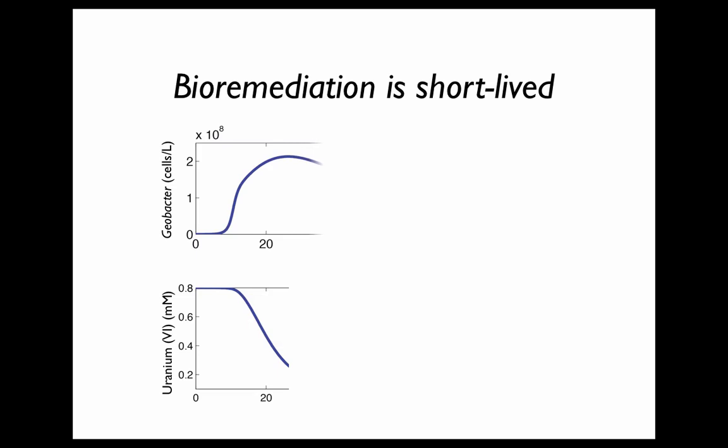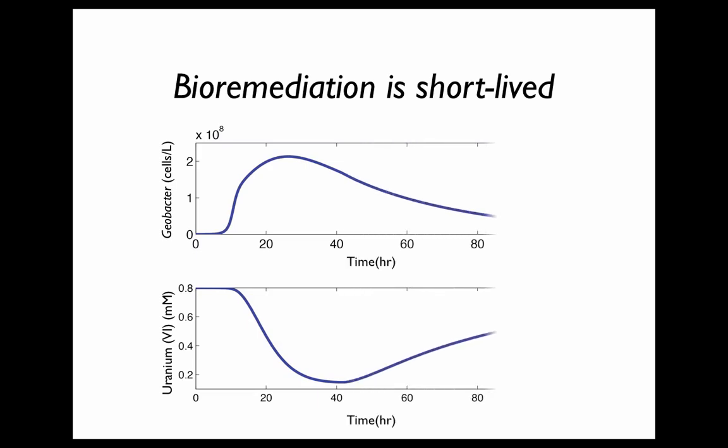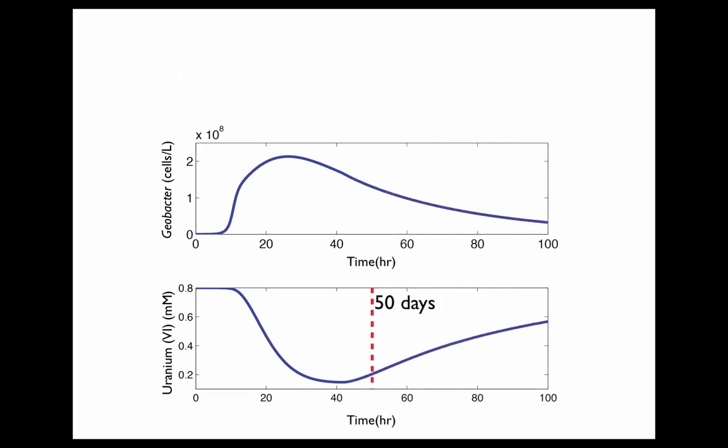However, soon after, the growth of Geobacter stops and the number of Geobacter begins to decay. As a result, the reduction of Uranium slows and eventually the concentration of Uranium-6 returns to a relatively high level. It seems that in most cases, the reduction of Uranium does not last past 50 days.